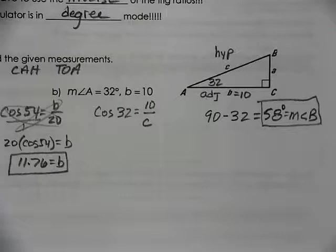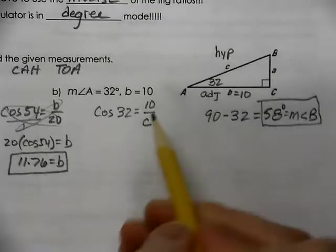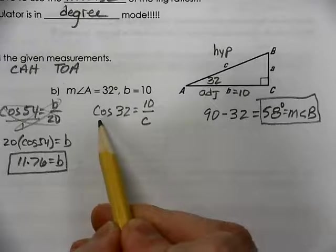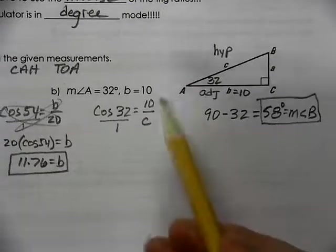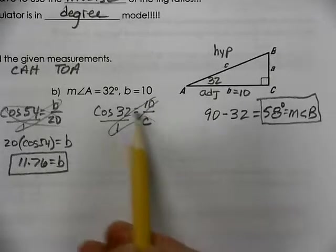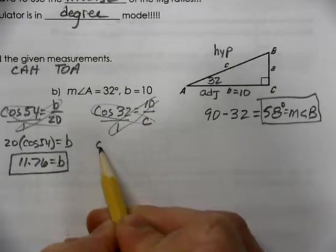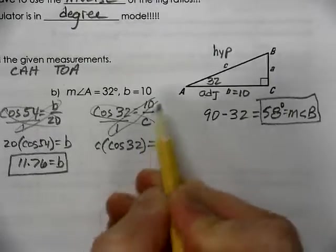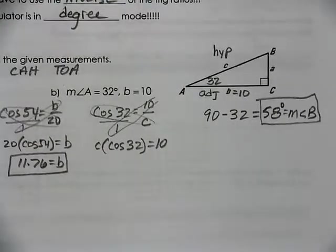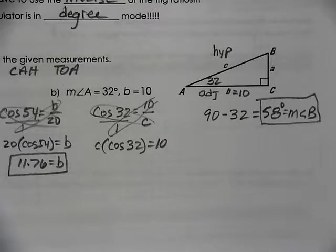Notice that the variable is on the bottom of the fraction, in the denominator. We place our trigonometry over 1, cross-multiply, so C times the cosine of 32 equals 1 times 10, which is 10.